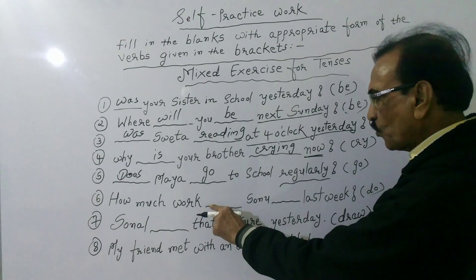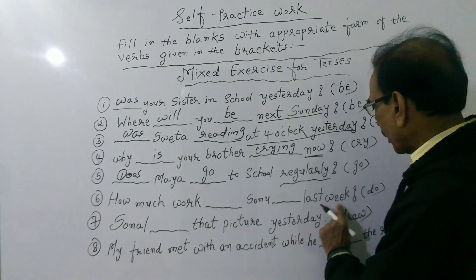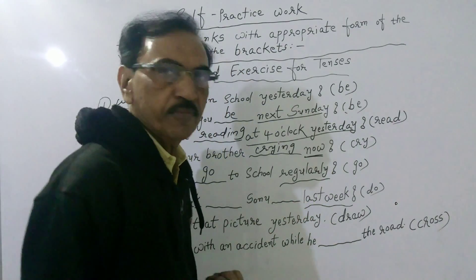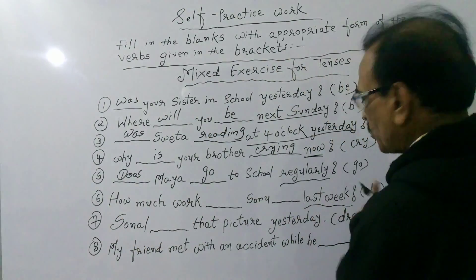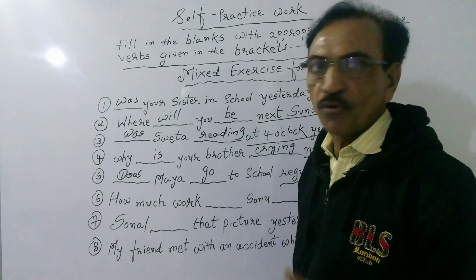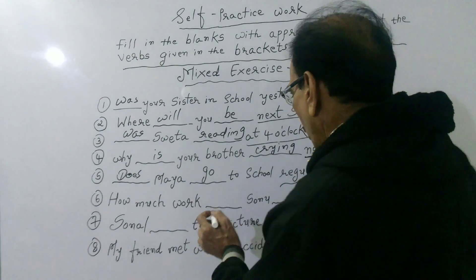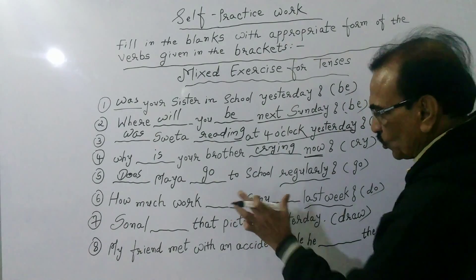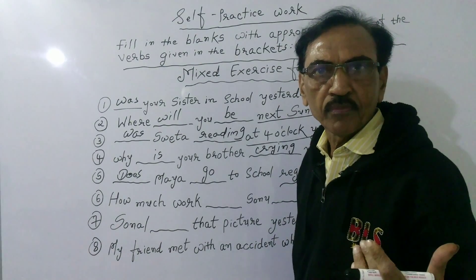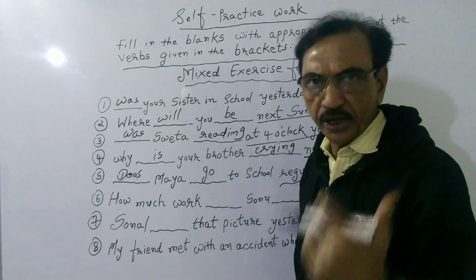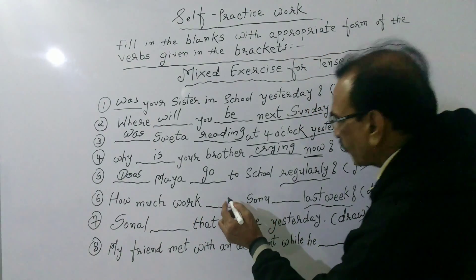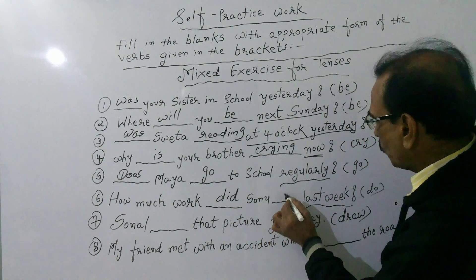Next sentence: How much work dash Showram dash last week? 'Last week' denotes simple past tense. This is an interrogative sentence beginning with a question word. In simple past tense, for negative and interrogative sentences, we use 'did' as a helping verb, and along with 'did' we use the first form of the verb. So the answer is: How much work did Showram do last week?